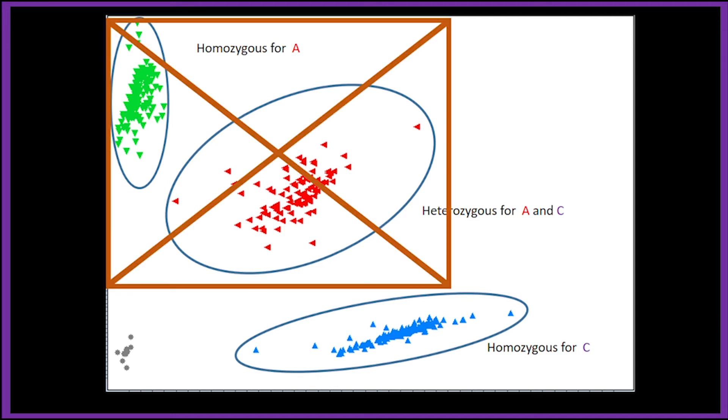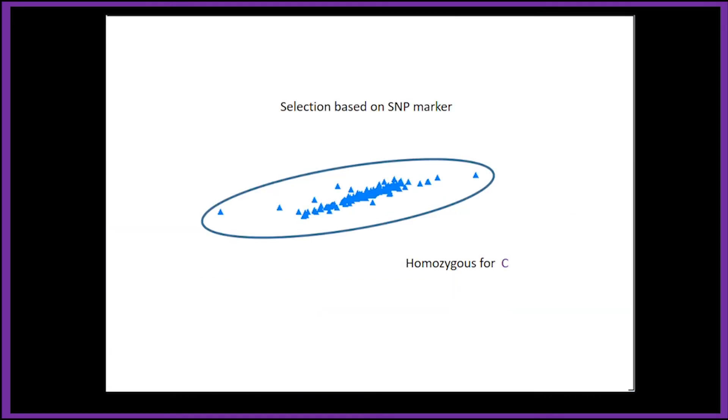We do not need the first two. Therefore, we select the blue cluster as plants that are potentially resistant. And that is one of the ways that marker-assisted selection can be applied in a breeding program.